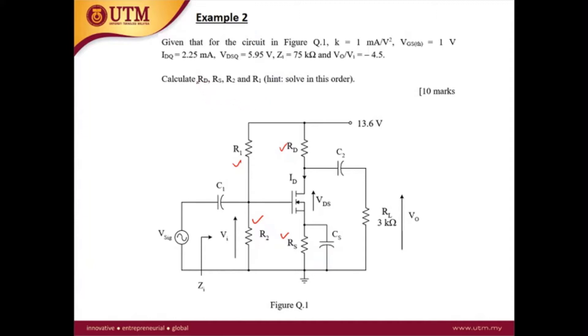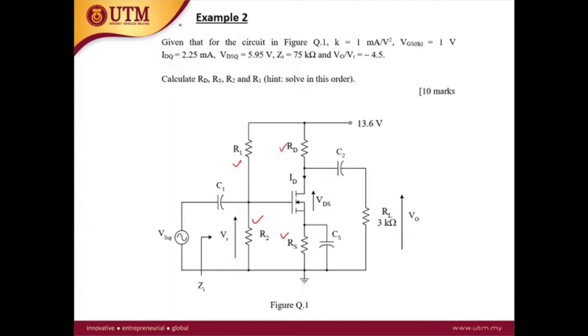RL is given, and gm can also be calculated because k and IDQ are known. To solve for RD we use the voltage gain. We start by drawing the mid-band equivalent circuit. This is a typical common source with a bypass capacitor.